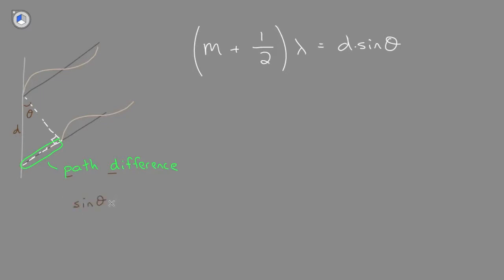Remember, sine theta equals opposite over hypotenuse, which equals the path difference, PD, over hypotenuse, which is D. So we should see that the path difference equals D times the sine of the angle theta.